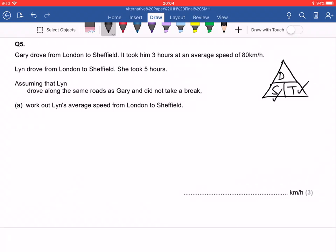That means we can work out the distance that Gary traveled. So to work out the distance, we're gonna do speed times time. So we're gonna do 3 times 80. So 3 times 8 is 24, add the zero.